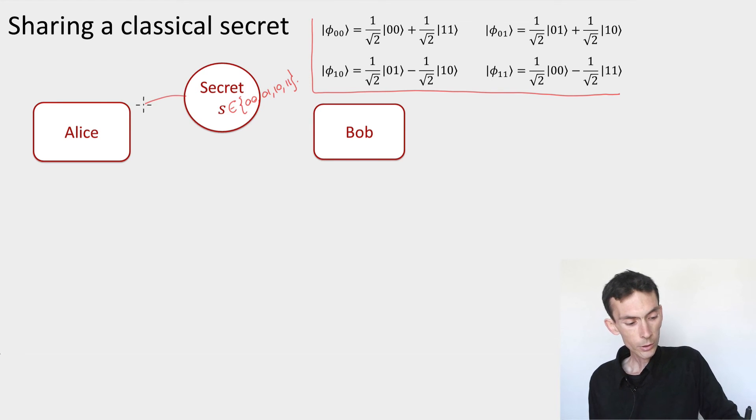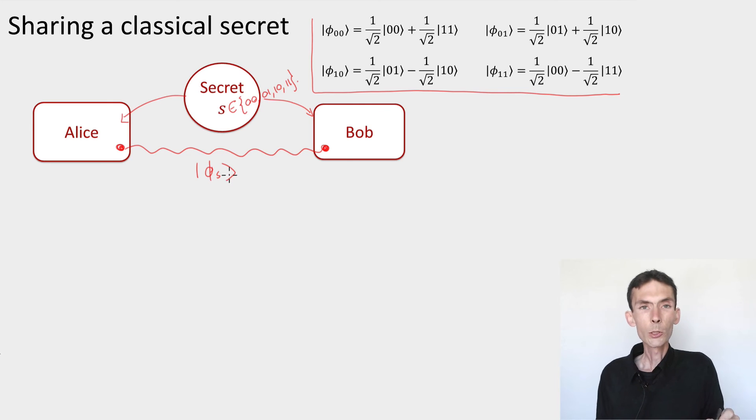So let me distribute the secret as a quantum state, phi s, that will be shared between Alice and Bob. And the properties that I want are exactly the same as before, given their share of the state, meaning given Alice can only have access to rho A, Bob to rho B, where rho is the density matrix corresponding to my pure state, phi s. So it's a rank one density matrix.